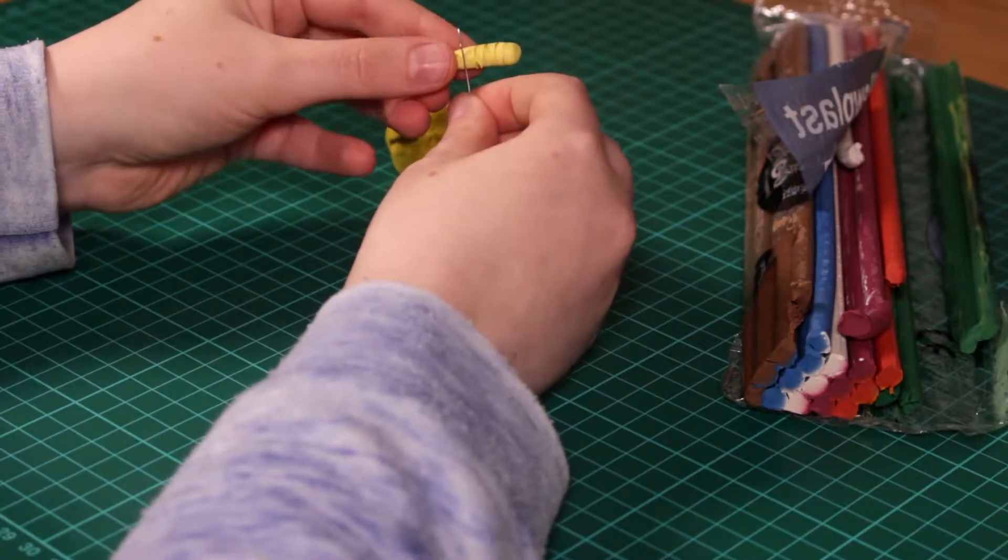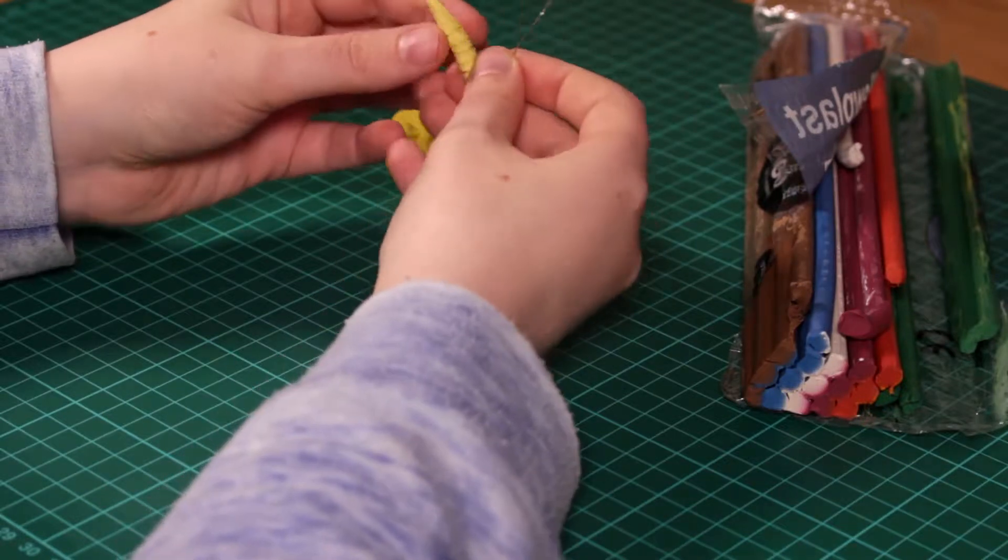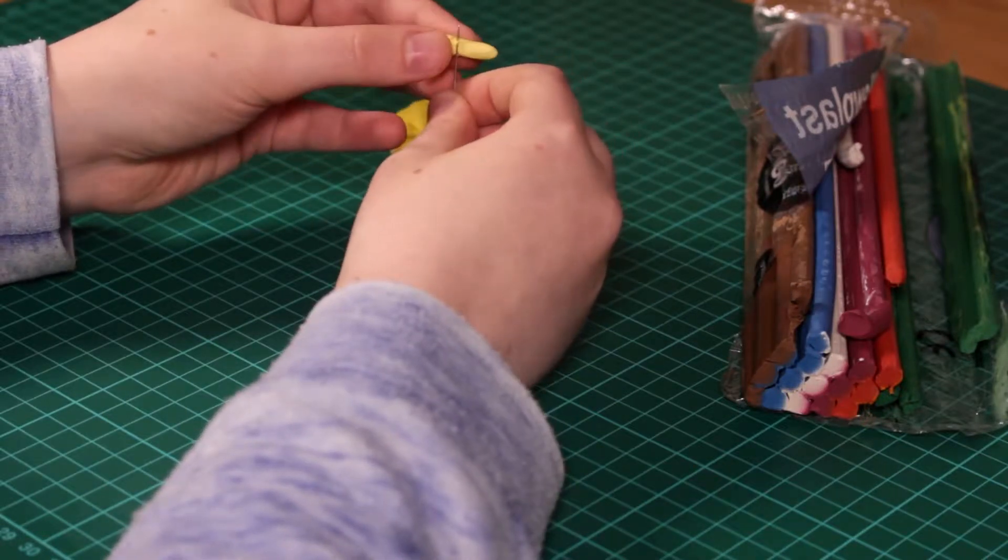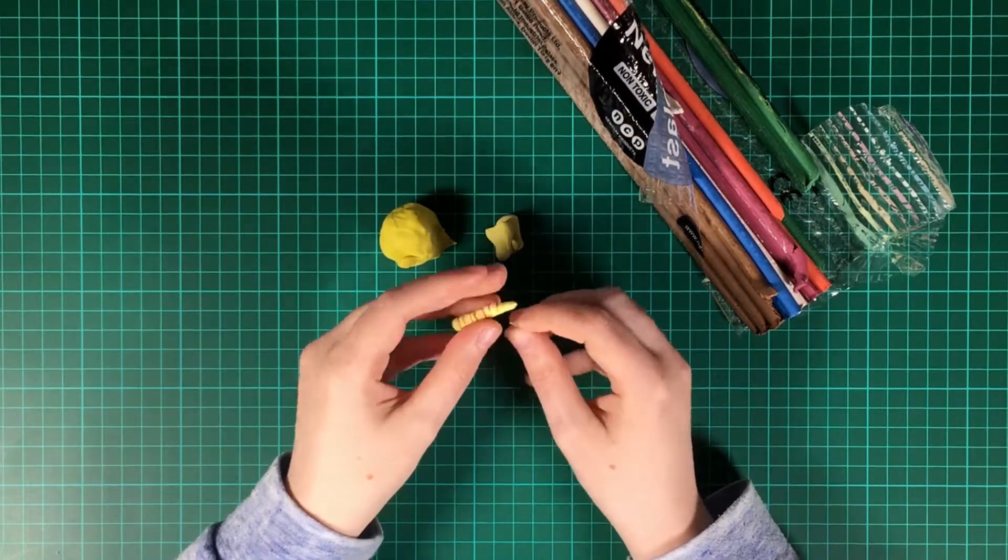If you watch a maggot moving, you'll see that it has a kind of textured skin made of rings, and this is what I am achieving by rolling a pin around the edge of the maggot's body.